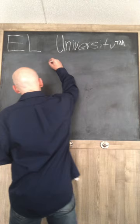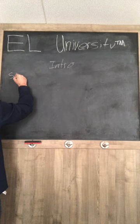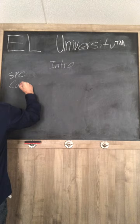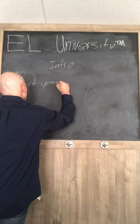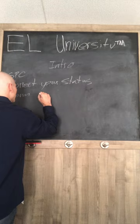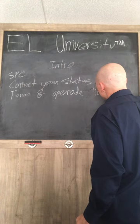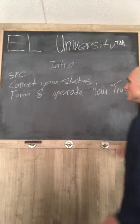We're going to start here with the intro. We will teach you how to become a secured party creditor, how to correct your status, and how to form and operate your trust. Three simple points — that's to begin with.